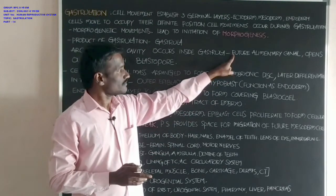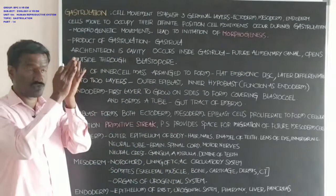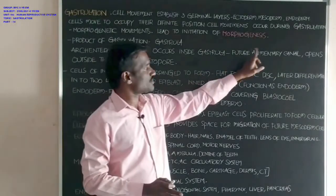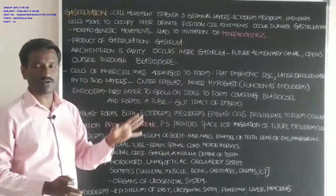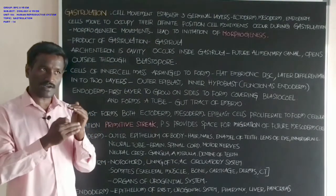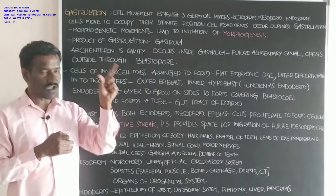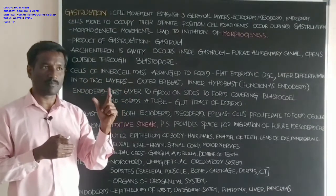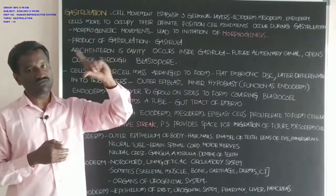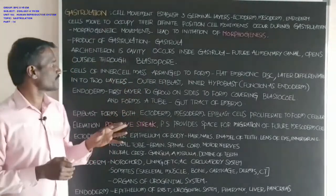The archenteron is the future alimentary canal — the future food tube or gut. It opens to the outside with the help of a pore-like arrangement on the outer surface of the gastrula, and that pore is called the blastopore.